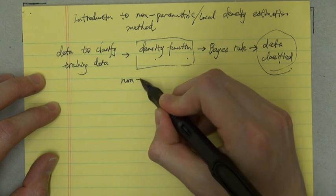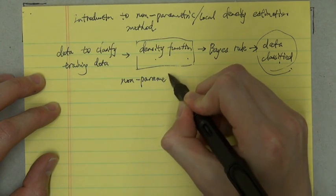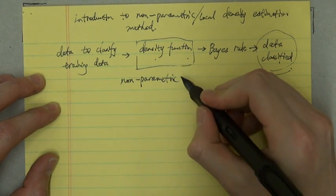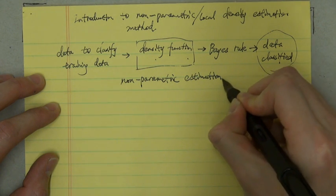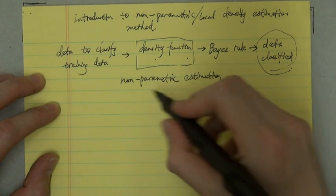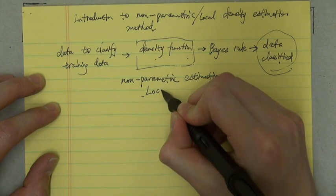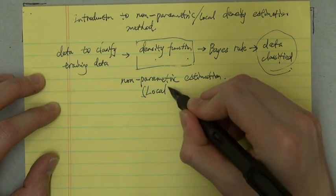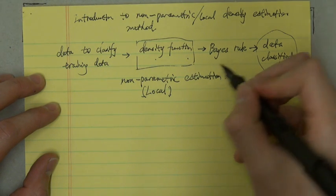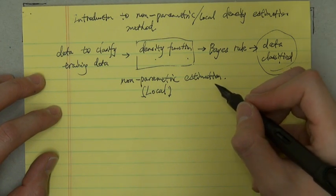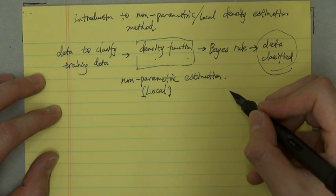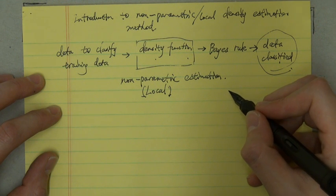So this approach, we call it non-parametric estimation. Also, we can call it local density estimation. So this type of approach, the density function is estimated locally by a small number of neighboring points.